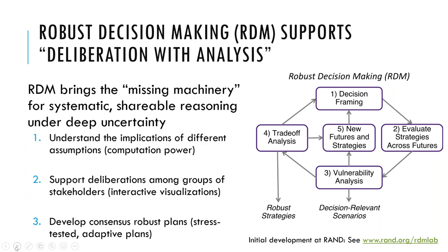Robust Decision Making is one flavor of Decision Making Under Deep Uncertainty. You'll also hear about multi-objective RDM, which is an elaboration of the method to address different aspects of the decision problem. RDM is a generalizable approach that brings what you might call the missing machinery for systematic, shareable reasoning under uncertainty. It provides structure for analyzing a decision problem when you have all of this uncertainty, using computational power to look at many, many scenarios, bringing in interactive visualizations to support dialogue and deliberation with stakeholders, and with the objective of identifying robust strategies that perform well regardless of how the future unfolds.